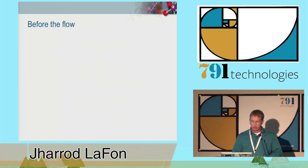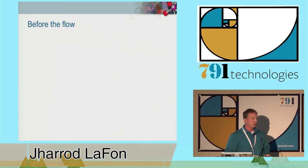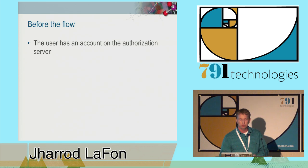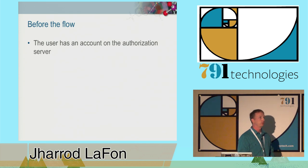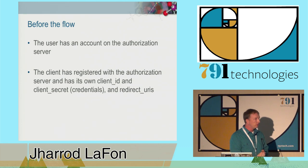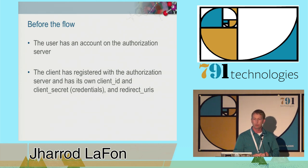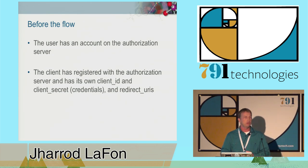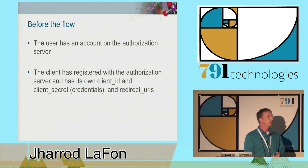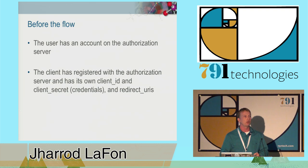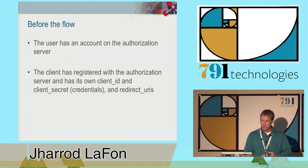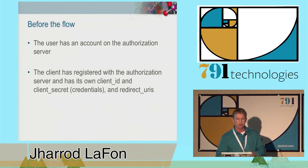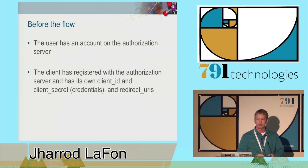So how does it all work? I'm going to walk you through the authorization code flow. Before we begin, a few things have already been set up. We assume that the user has an account on the authorization server. The client has also registered with the authorization server, so it has its own ID and its own secret—which you can think of as a username and password—and that's a secret that the confidential client is capable of keeping. It also specifies another field called redirect URIs, which I'll explain later.